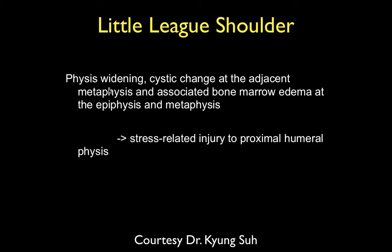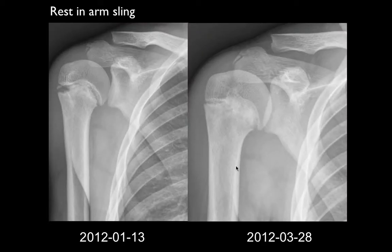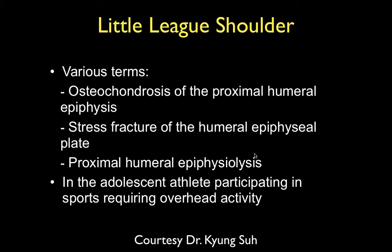With Little League shoulder you see physeal widening, cystic changes adjacent to the metaphysis, and bone marrow edema — that's a stress reaction. Here it is healing after the patient was allowed to rest. Various terms are used — osteochondrosis, proximal stress fracture, proximal humeral epiphysiolysis — but I believe it should simply be called a growth plate fracture. Using that term makes people take it more seriously, rather than terms that mask the severity of the abnormality.